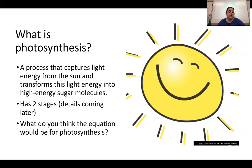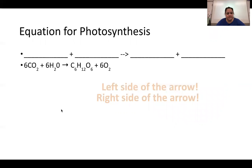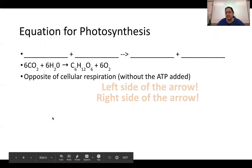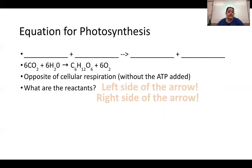Since photosynthesis and cellular respiration are opposites, the equations are opposite. The equation for photosynthesis is: 6CO2 + 6H2O → C6H12O6 + 6O2. It is basically the cellular respiration equation flipped — without the ATP. The reactants on the left are carbon dioxide and water; the products on the right are glucose and oxygen.